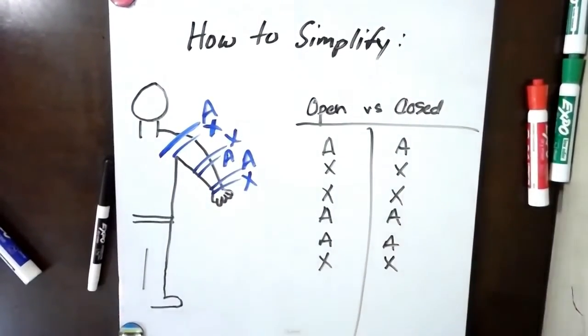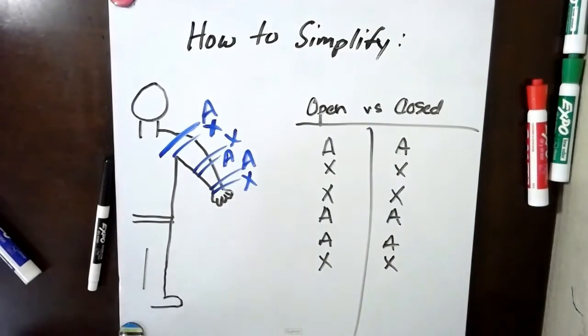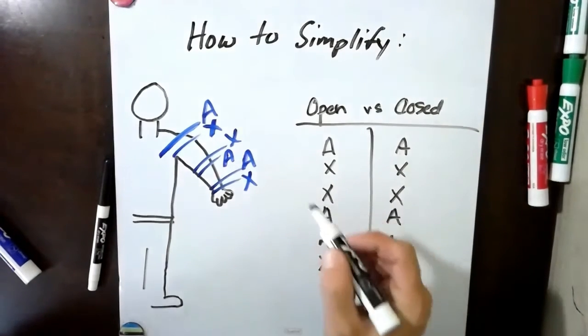And now, open chain versus closed. Open chain says that the proximal end is fixed and the distal end is moving, therefore the moving bone makes the rule. In this case, the distal bone.